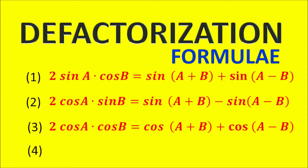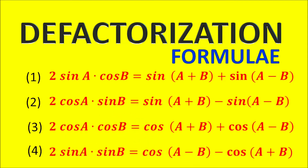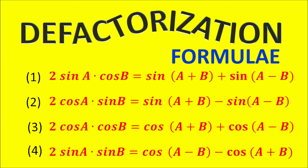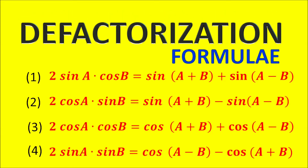Fourth Formula: 2 sin A into sin B is equal to cos(A minus B) minus cos(A plus B).